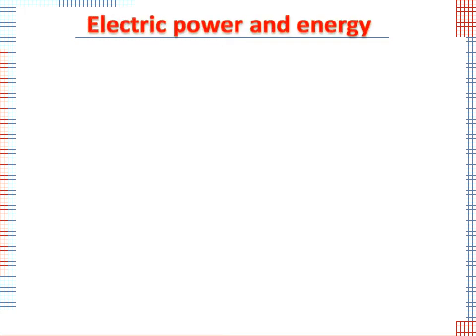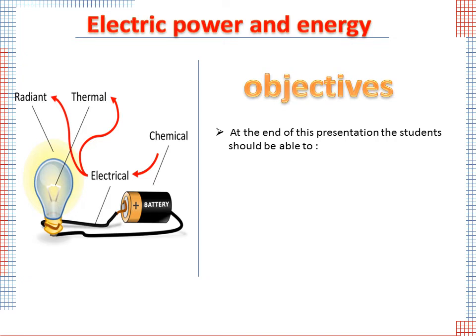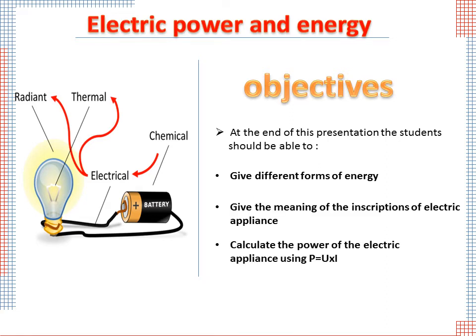Our lesson today is about electric power and energy. Objectives: At the end of this presentation, the students should be able to give different forms of energy, give the meaning of the inscriptions of electric appliances, and calculate the power of electric appliances using P equals U times I.